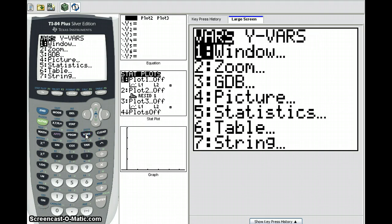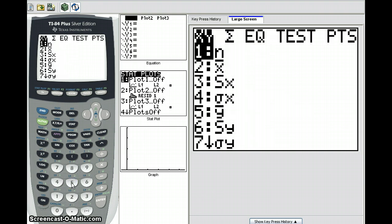Click on VARS. What sort of variables are we looking at? We're looking at something we've calculated using the statistics functions. So we'll choose number 5, which is statistics. We want to paste an equation. You can see across the top we see EQ. We'll scroll across to EQ.